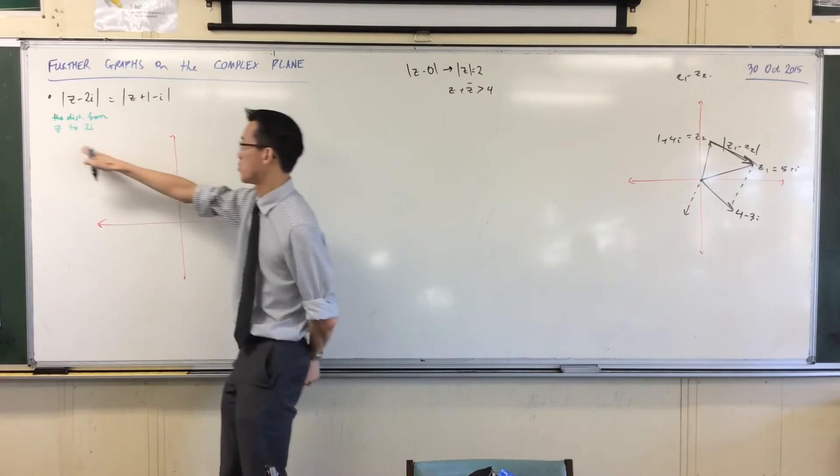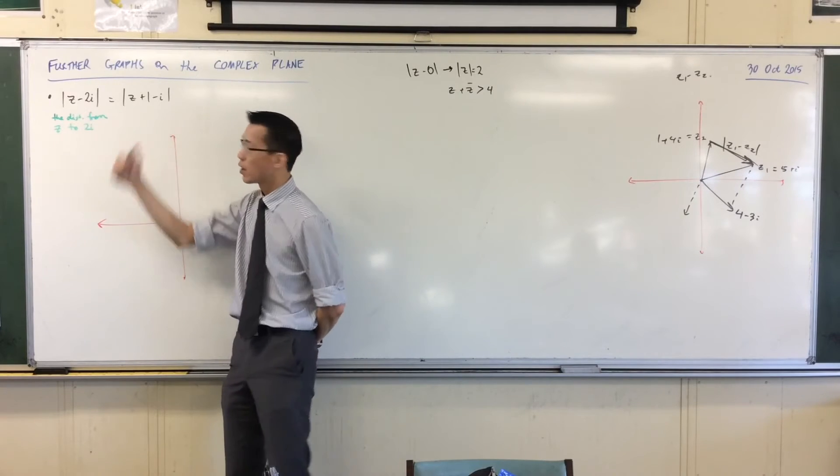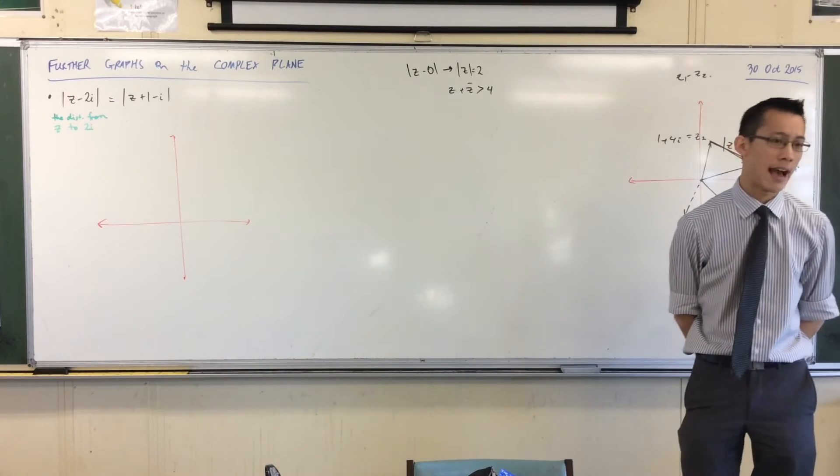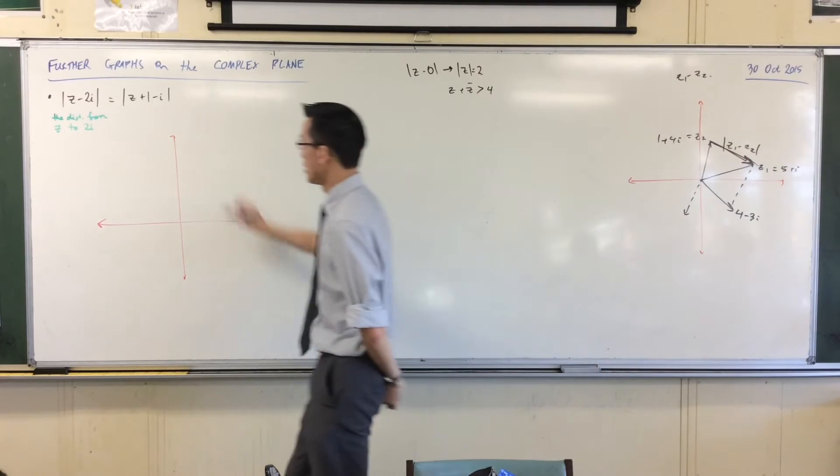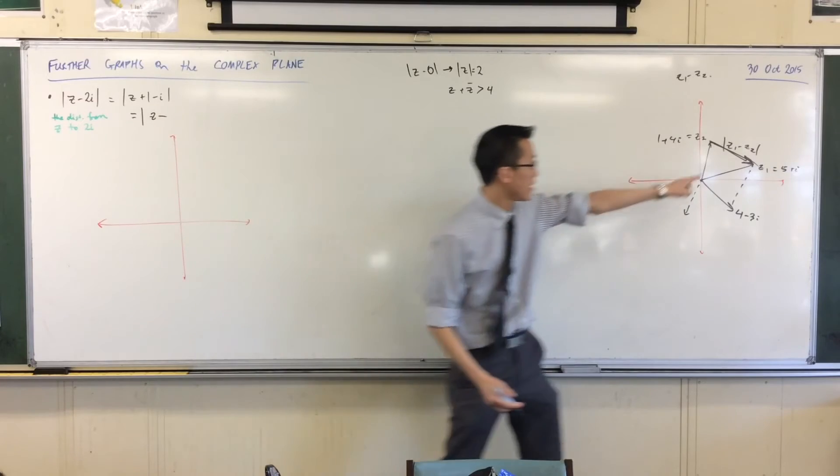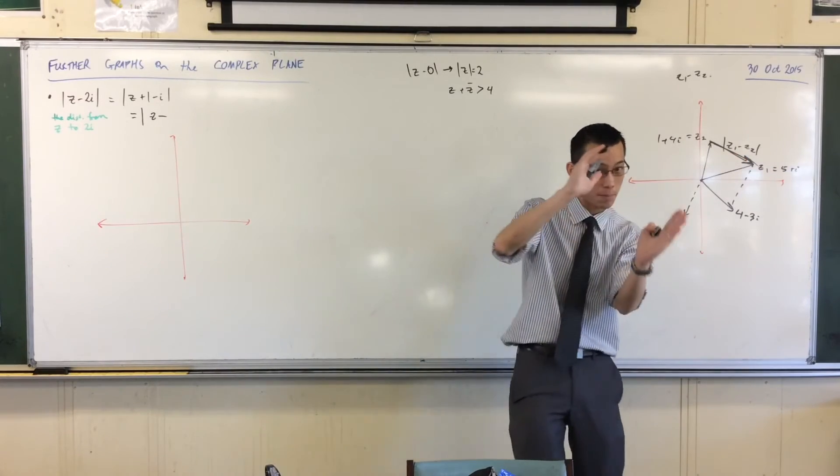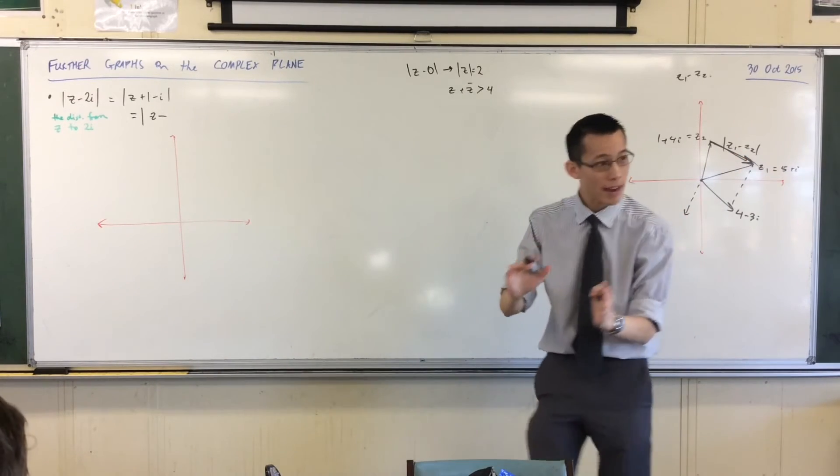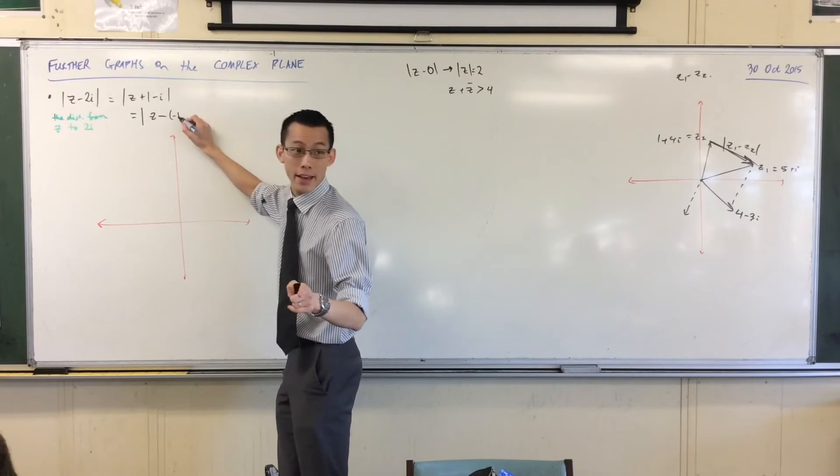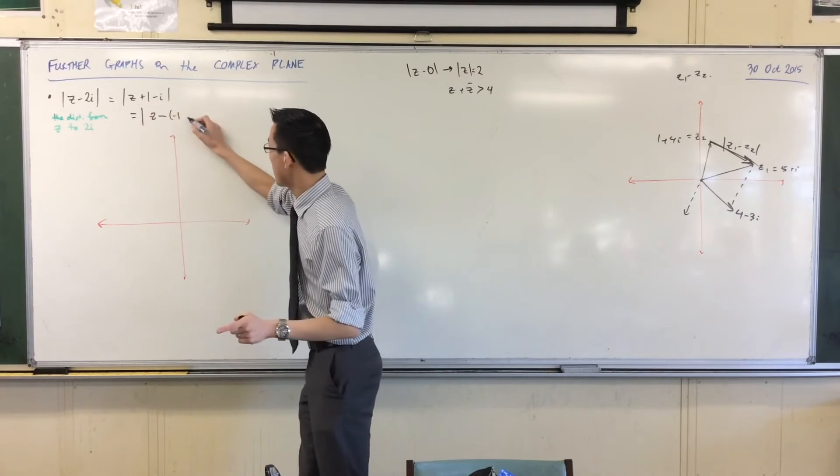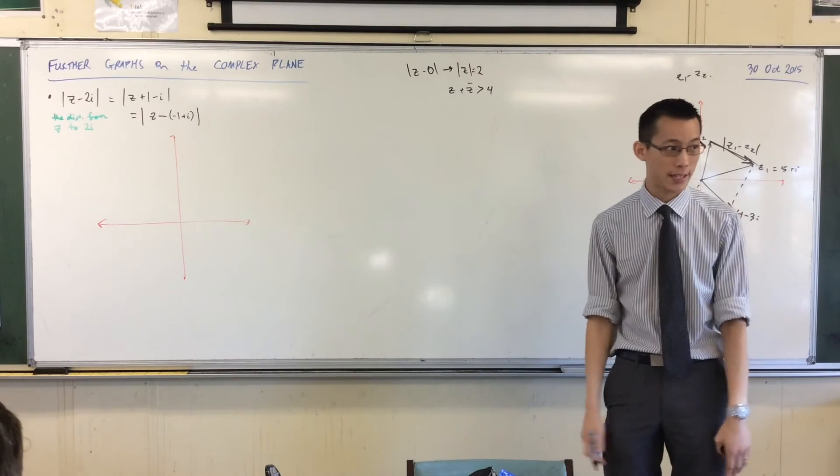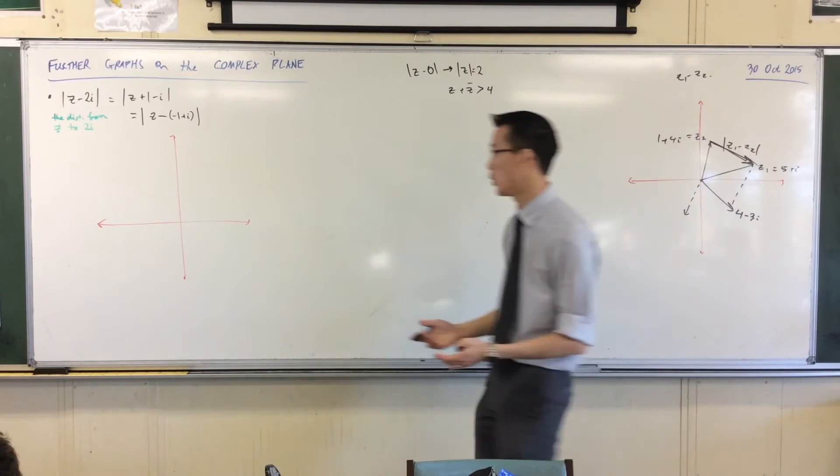If the left-hand side means the distance from z to 2i, what does the right-hand side mean? It's not in the right form for us at the moment. How can I change it? It should be absolute value of z take away something, right? You see that? Take away something, that's what tells you to compare distances. What am I subtracting? Yeah, good. I've got to have a double negative there to get my positive. And then I've got plus i. So, minus 1 plus i, that's another point. And I'm comparing my distance to that as well.